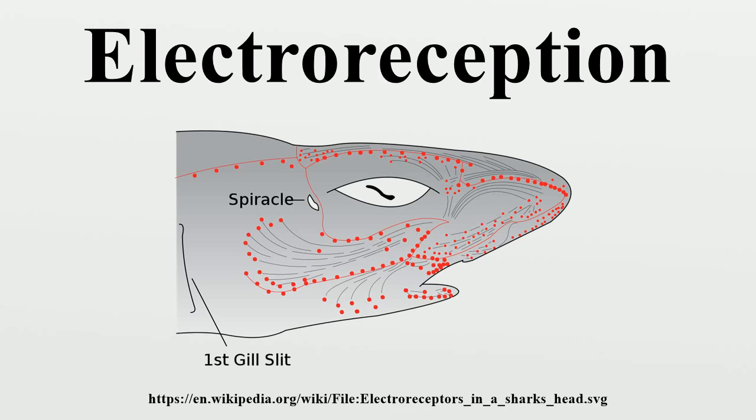Electroreceptive animals use this sense to locate objects around them. This is important in ecological niches where the animal cannot depend on vision, for example in caves, in murky water, and at night. Many fish use electric fields to detect buried prey.